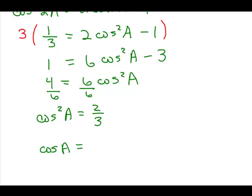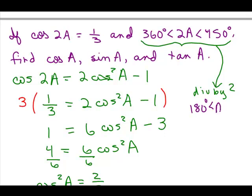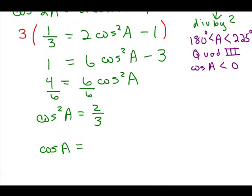We go back to the other information we have: 360 degrees is less than 2a is less than 450. If we divide all sides by 2 to find where a is — 360 divided by 2 is 180, 2a divided by 2 is a, and 450 divided by 2 is 225 — this tells us that a is in quadrant 3, and in quadrant 3 the cosine is negative.